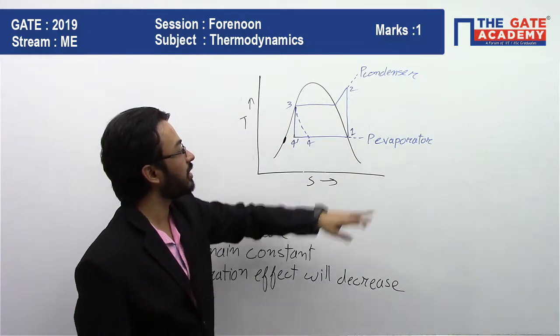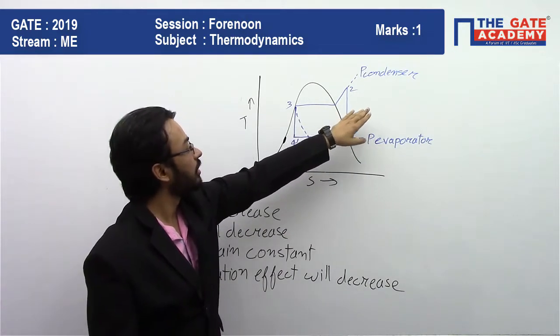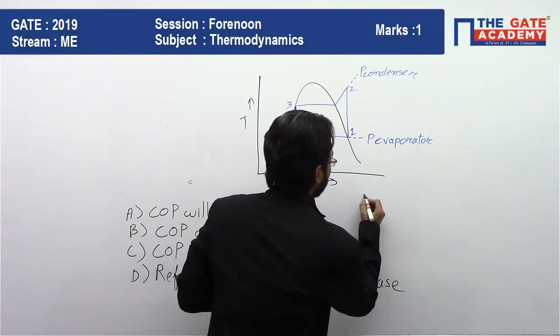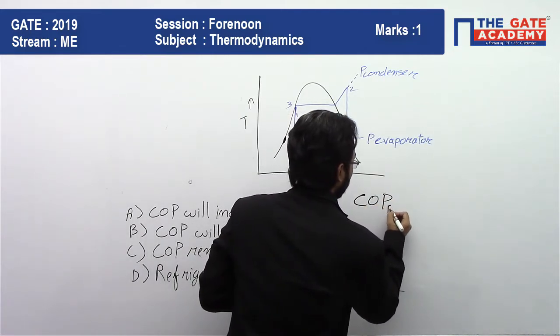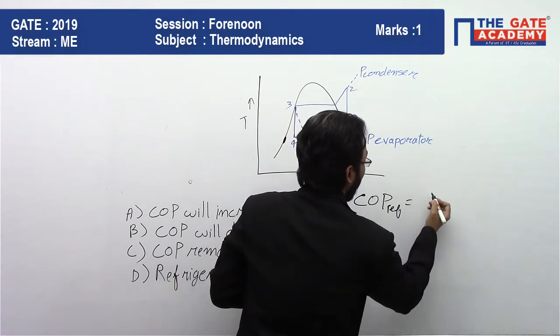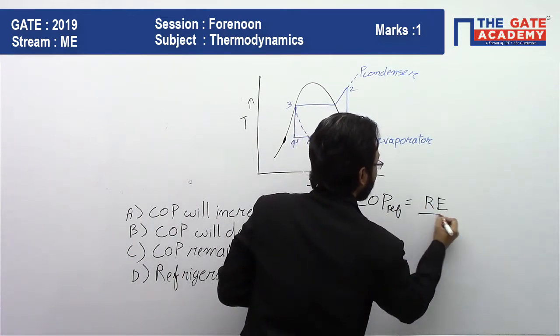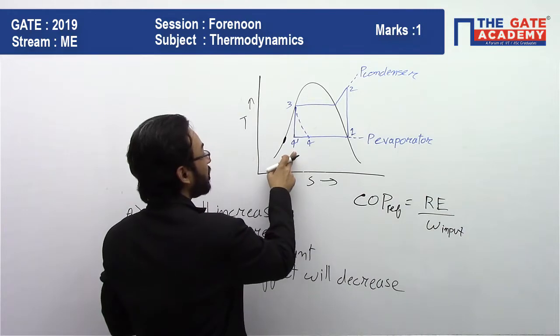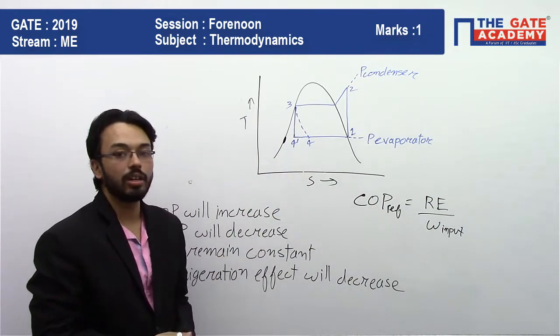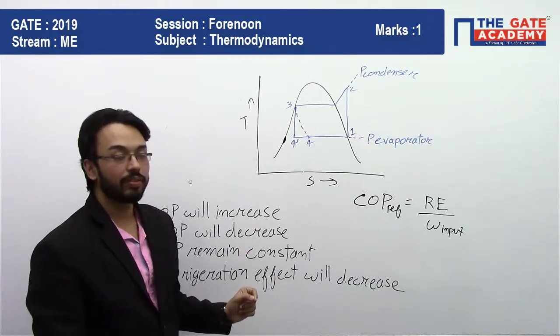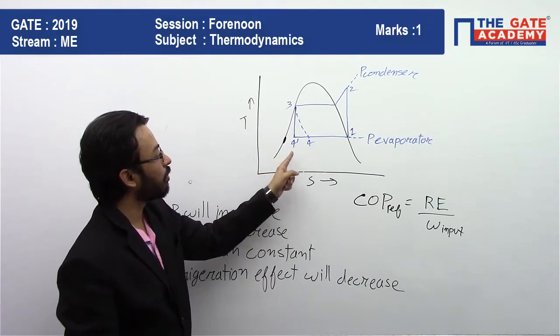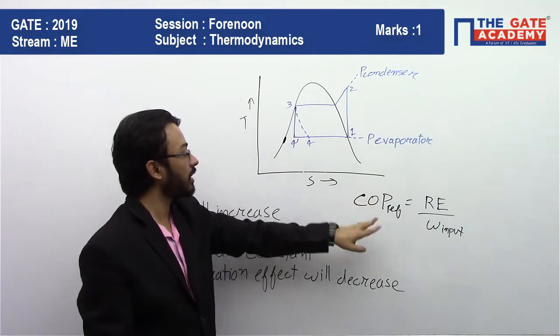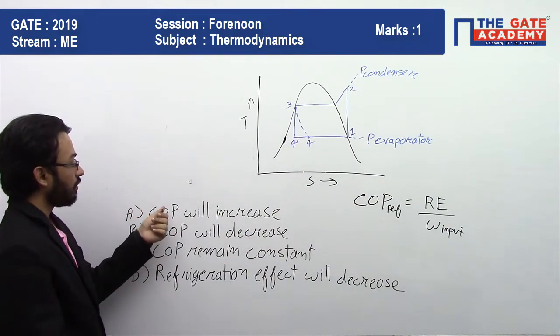And the work input to the compressor is not changing. And we know that COP of a refrigerator is given by our desired effect, that is refrigeration effect by work input. So as you can see that refrigeration effect increases when we expand adiabatically. The refrigeration effect when we expand adiabatically is from 4 dash to 1. So refrigeration effect increases, work input stays the same. So definitely COP will increase.